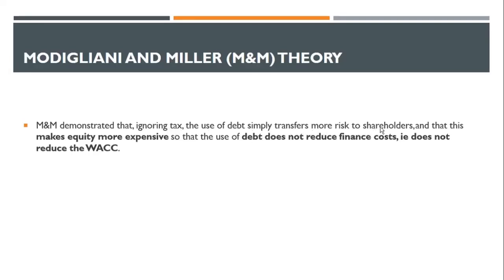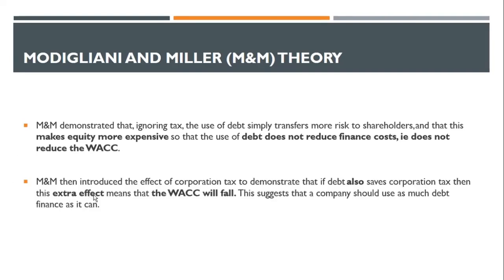Modigliani and Miller (M&M) demonstrated that ignoring tax, the use of debt simply transfers more risk to shareholders, making equity more expensive. So as you add more debt there is more risk, equity shareholders start asking for higher returns, and the use of debt does not reduce the WACC. In the absence of tax, as you add more debt your WACC remains unchanged. M&M then introduced the effect of corporation tax: when you introduce corporate tax, and debt also saves corporate tax, that extra tax shield effect means the WACC will fall. This suggests a company should use as much debt finance as possible.